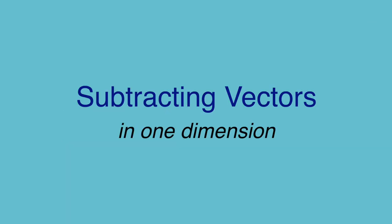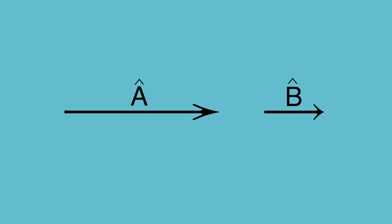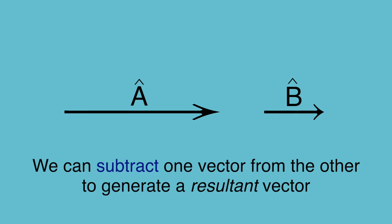What if we need to subtract these two vectors instead? Suppose you're asked to take b dash away from a dash. What then? Subtracting vectors still creates a third vector, known as the resultant vector. To explain how it's done, let's quickly look at some ordinary number subtraction.